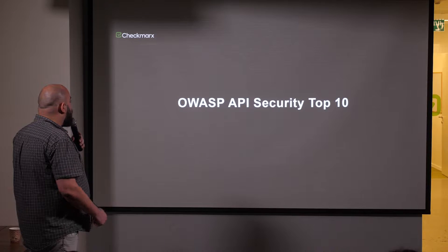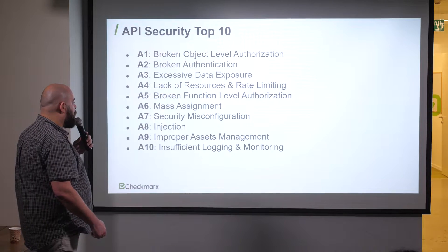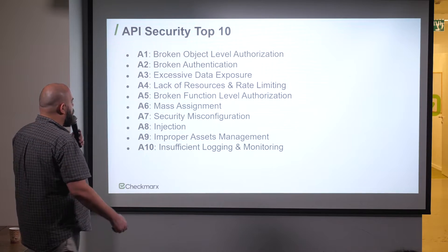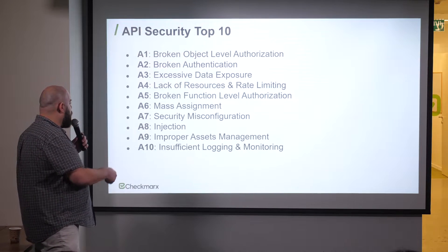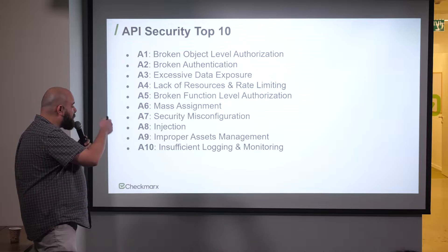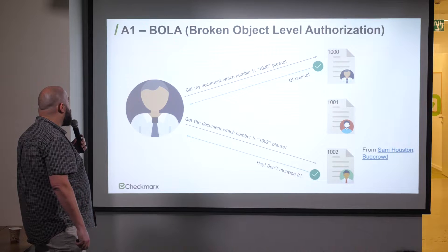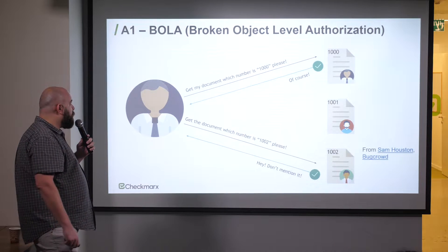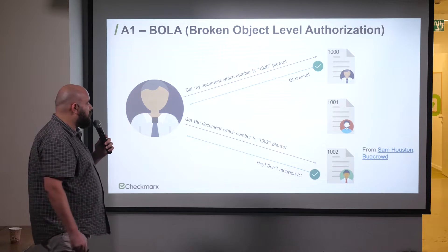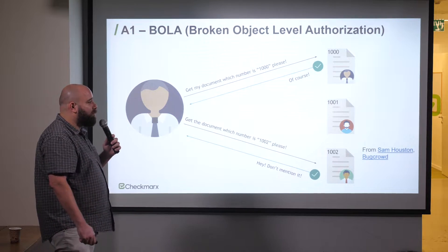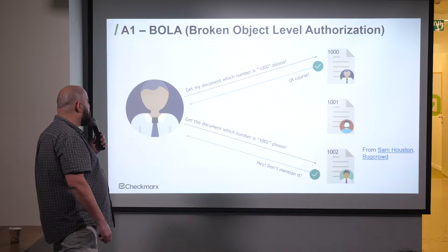Now I want to introduce the OWASP API Security Top 10. Let's start with A1 — BOLA, Broken Object Level Authorization. Don't Google BOLA — it's a fairly new term. Inon invented it.